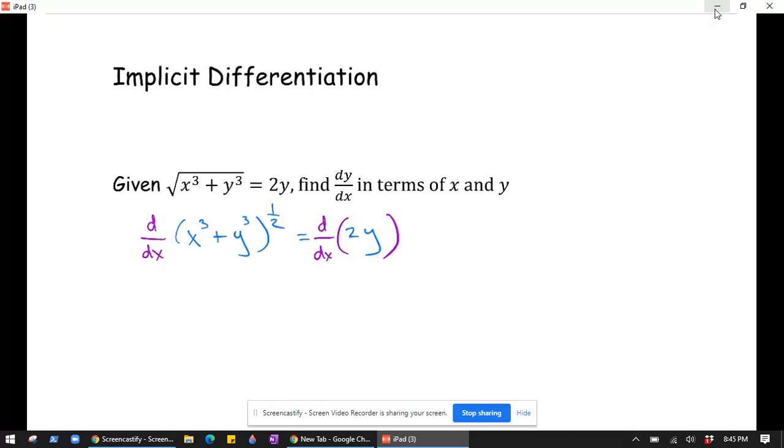Okay, and so this becomes, you're going to be using the chain rule here on the left side. So it's going to be 1/2 times x cubed plus y cubed to the negative 1/2—that was the outside part. And then we've got to follow it up with the derivative of the inside part, which is 3x squared plus 3y squared times dy/dx. So that's the left side. The right side will just be 2 times dy/dx.